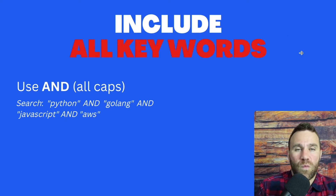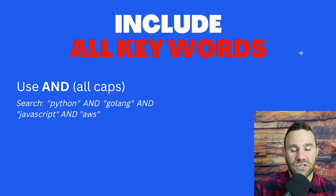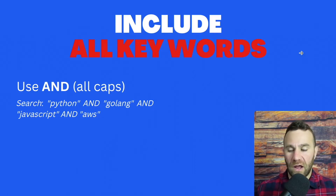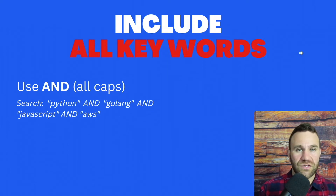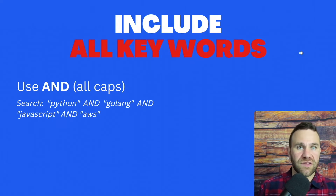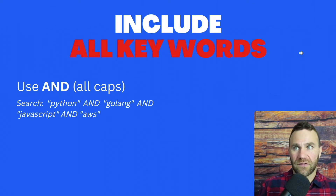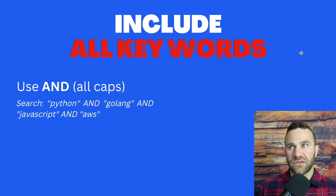One thing I'll do very often is include all keywords or all the skills in a certain job description in my search. So I won't search for that job title in LinkedIn, but I'll just keep entering in all the skills listed in that JD. What you need to do is use the term AND in all caps in between all of those phrases. So if I'm looking for a software engineer and the JD lists Python, Golang, JavaScript, AWS, and more — I just keep typing in "Python" AND "Golang" AND "JavaScript" in quotations.